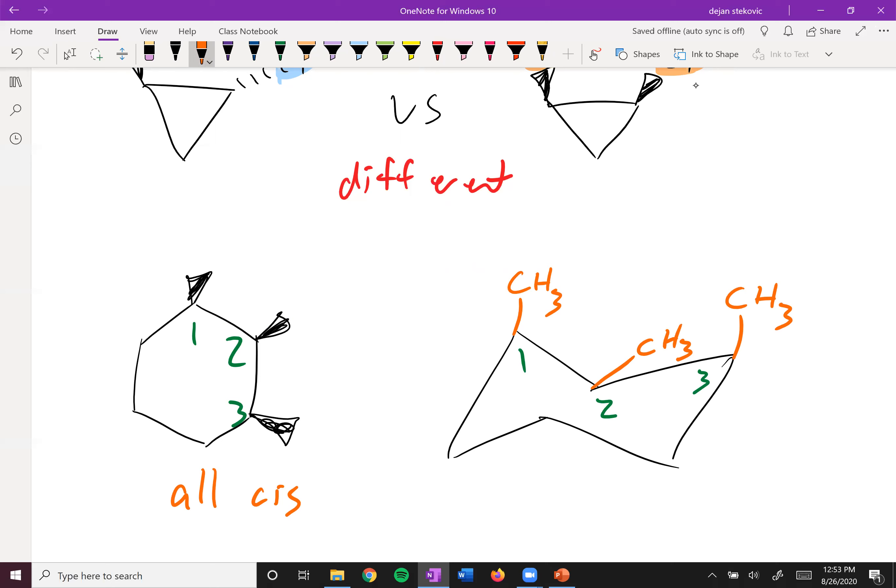They're all cis, but some are axial, some are equatorial. This is actually going to be the higher energy conformer. The chair flip would actually be lower in energy where you have two equatorial and only one axial. So it's a little confusing; you have to think about both of these, both the kind of 2D what we draw on this piece of paper and this more 3D image on the right.